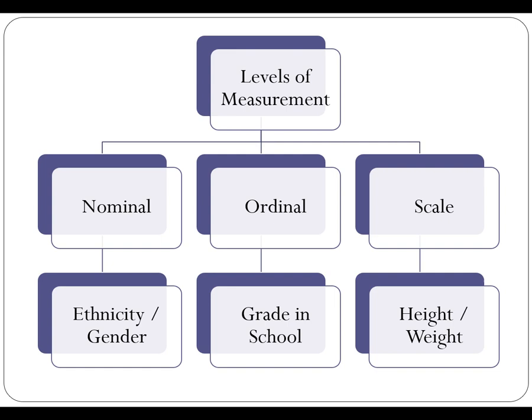Scale level of measurement includes things like height and weight — these are strictly quantitative measurements. Height and weight — our discrete and continuous variables — fall into the scale level of measurement. We might use different measurements and graphics to represent that information. You could say you can rank height from tallest to shortest, so scale can take on ordinal level of measurement, but again we want to classify data in terms of its highest level of measurement because of the different things we'll be able to do with it, especially when classifying it in software so we can use those features appropriately.